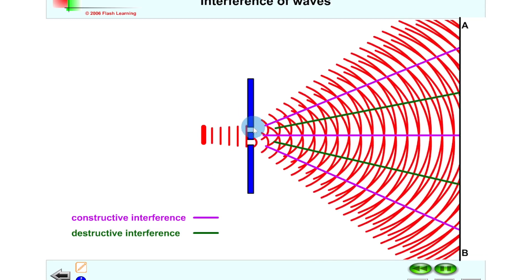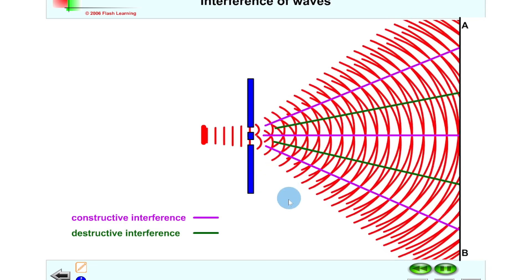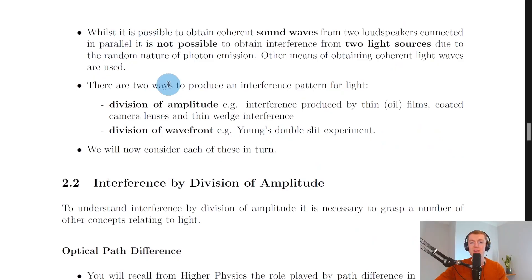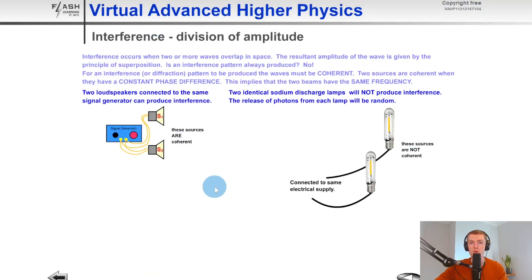This is diffraction occurring at the slits, where waves bend or squeeze through the slits — that's why we get this bending or diffraction of the waves. Whilst it is possible to obtain coherent sound waves from two loudspeakers connected in parallel, it is not possible to obtain interference from two light sources due to the random nature of photon emission.